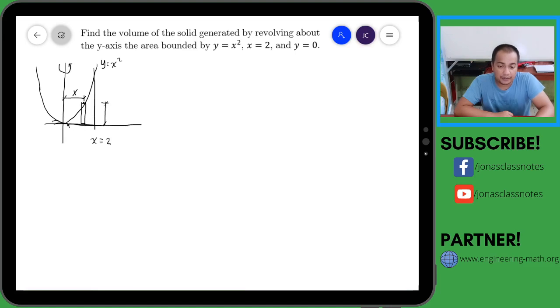So ang height natin, since naka—yung rectangular element natin ay nakapatong dito kay y-axis, so basically this is y. Y yung height ng ating rectangular element. Since vertical nga itong rectangular element natin.